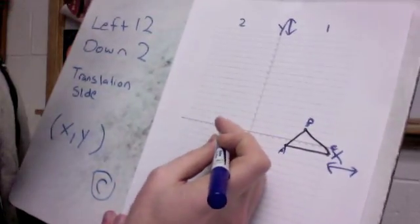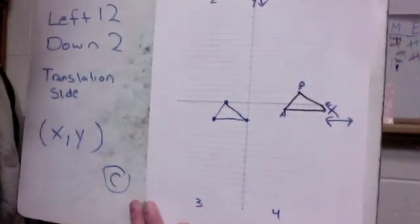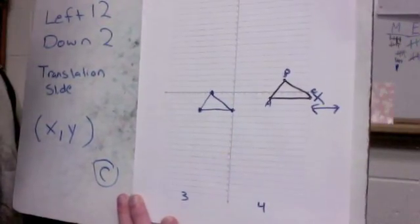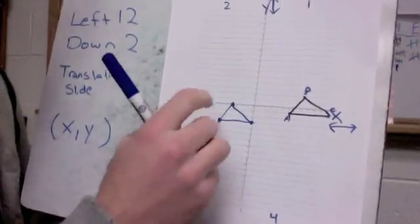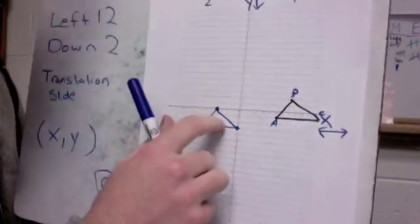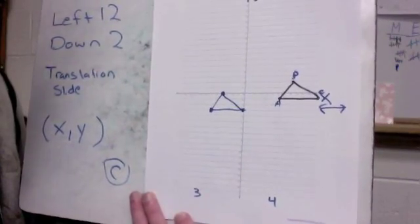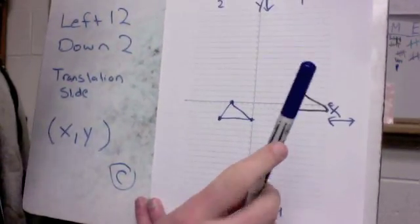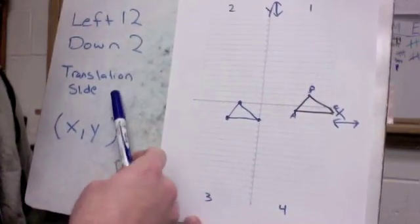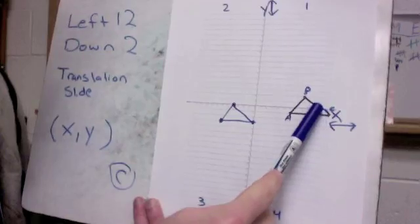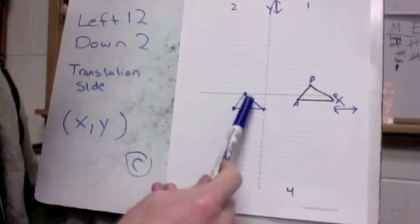Now I've got all my points. Connect them up. I've got the same shape. And by the way, scalene triangle just means that all three sides are different lengths. If I measured this side, this side, and this side, they would all be different lengths and that's what a scalene triangle is. So this should have been your original shape for this one. After you did the translation or after you did the slide, it should have slid over 12 or left 12 and down 2 to get right there.